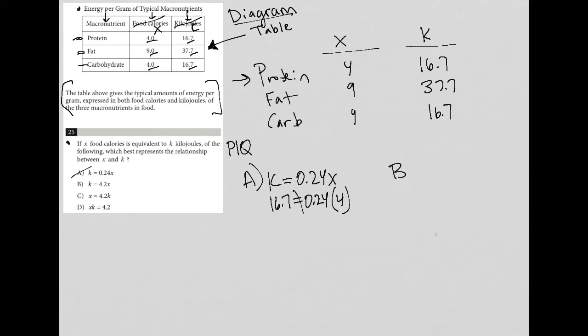How about answer choice B? B says that K equals 4.2X. Is it true that 16.7 equals 4.2 times 4? If you put 4.2 times 4 into your calculator, you're going to get 16.8. I think that's going to be good enough. I'll check mark it and continue on to see if that's going to be the best answer.